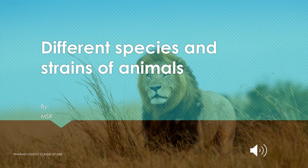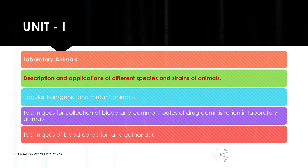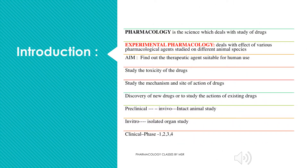Welcome back to Pharmacology Classes by MSR. In the fifth semester, we have experimental pharmacology as an elective. The first topic in Unit 1 is the description and application of various species and strains of animals. Pharmacology is a science which deals with drugs, whereas experimental pharmacology deals with various pharmacological agents studied on different animal species.